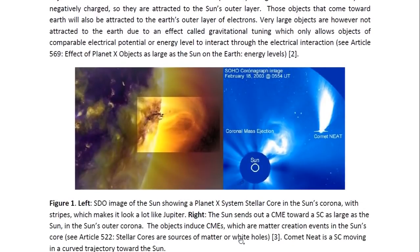And here you see some of these objects, and this is one of them in the Sun's corona, one of the Planet X System's stellar cores. And you can see that this one has stripes which makes it look a lot like Jupiter. The stripes are curved because they follow the contours of a clearly spherical object in the Sun's corona. And here's another one. It's clearly a spherical object.